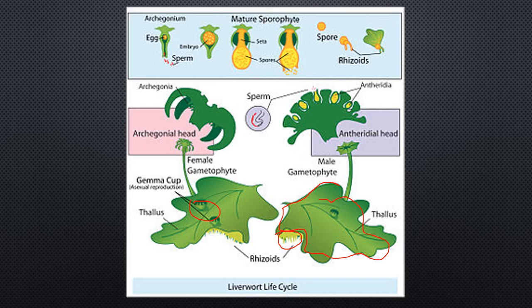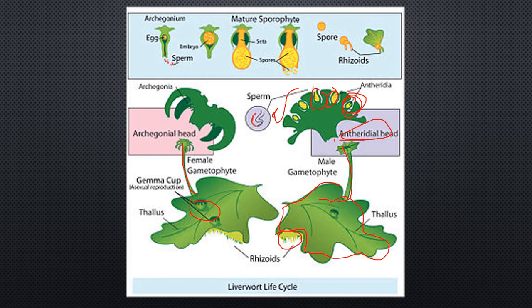In the male gametophyte — also called the gametangia — there is an antheridia head that houses all the antheridia, where sperm are produced. In the archegonial head there are archegonia where the eggs are produced. They then come together, and because they live in a very moist environment, sexual reproduction can occur.